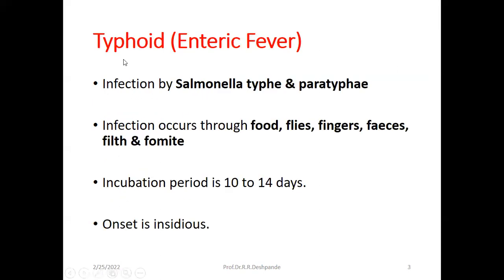Typhoid is also called enteric fever. This is an infection by Salmonella typhi or paratyphi. Infection occurs through contaminated food, and flies carry this infection. Unhygienic habits, non-cleaning of fingers, fecal matter, filth, and vomit are all causes. So there are 6 F's for typhoid: Food, Flies, Fingers, Fecal, Filth, and Foment.